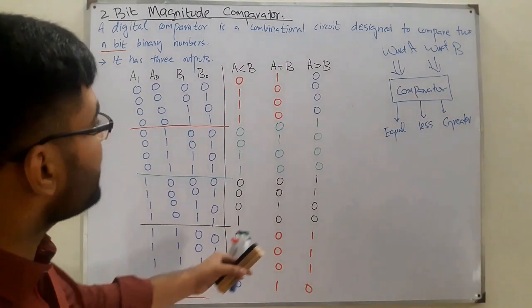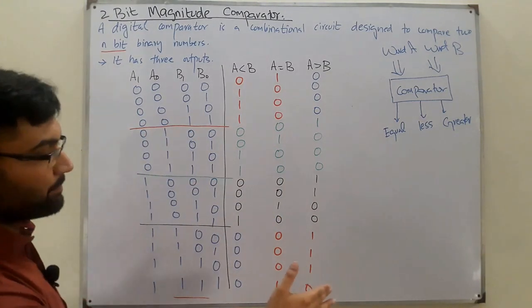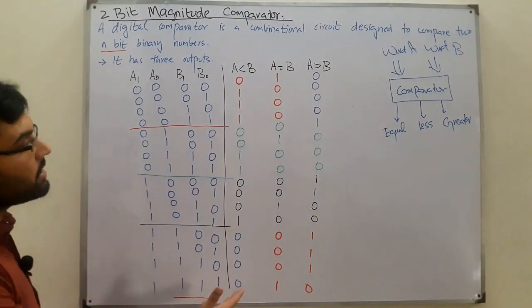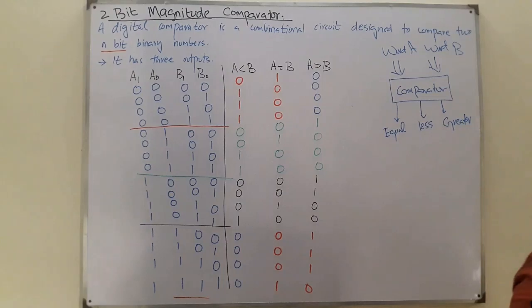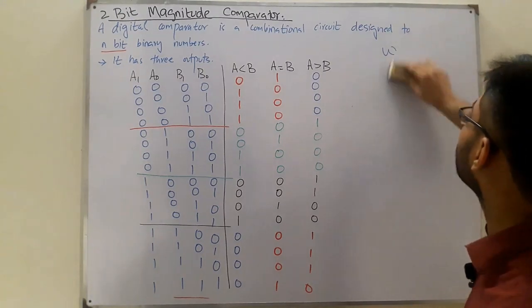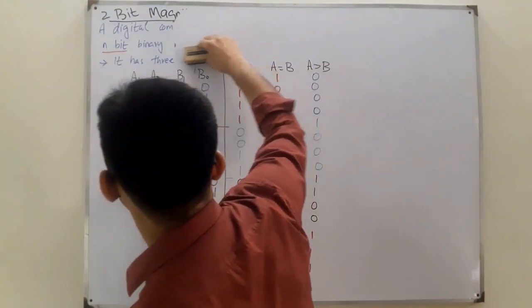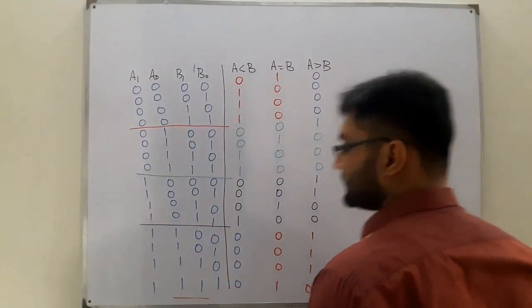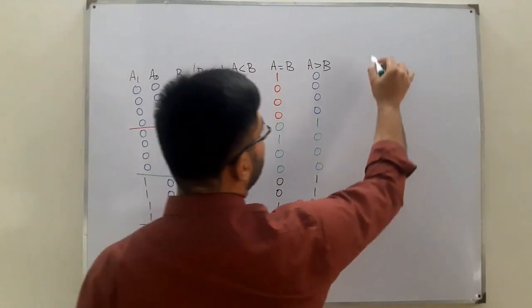This is now the final truth table for the two-bit magnitude comparator, showing columns for A-less-than-B, A-equal-to-B, and A-greater-than-B. Since we have three outputs, we need a function for each. This is a longer one so we solve it through K-maps. We need three 16-cell K-maps, and we also need space to draw the circuit diagram later.